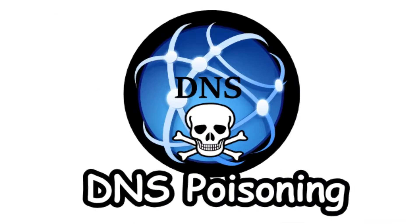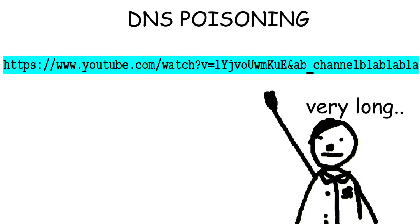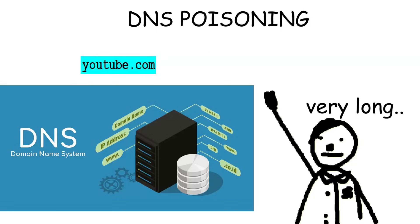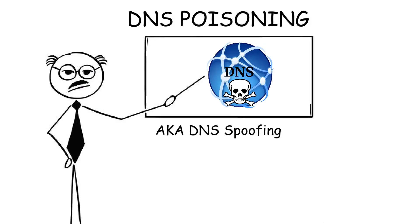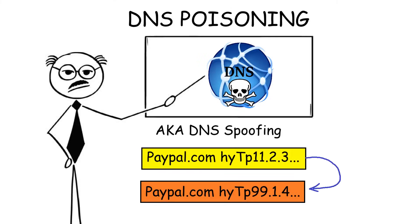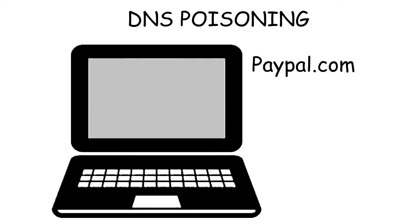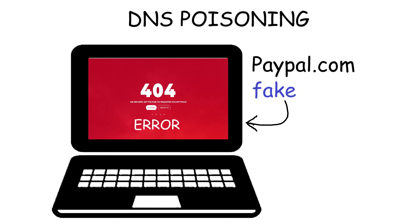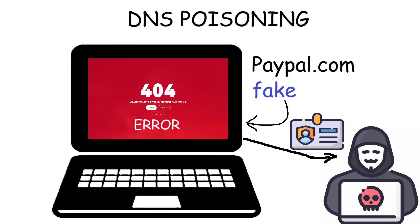DNS poisoning. Normally, websites are stored using really long addresses, but thanks to DNS — the domain name system — you don't need to remember any of that. But hackers can poison the DNS by changing the address of a website you want to visit to a different one. So if you type PayPal.com, you land on a fake PayPal site they already prepared. When you enter your password, it may say 'error' or 'something went wrong,' but your credentials have actually been sent to the hacker.